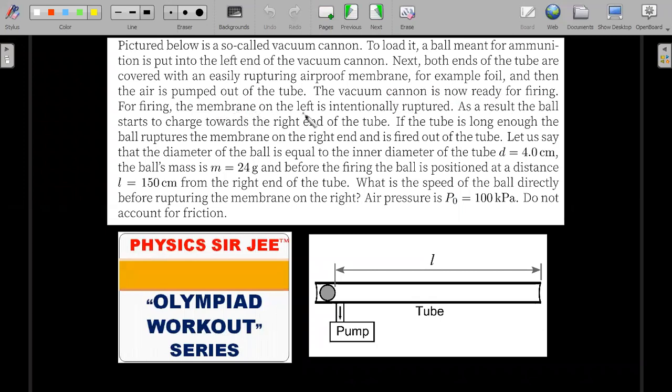For firing, the membrane on the left is intentionally ruptured. As a result, the ball starts to charge towards the right end of the tube. If the tube is long enough, the ball ruptures the right end of the membrane and is fired out of the tube.